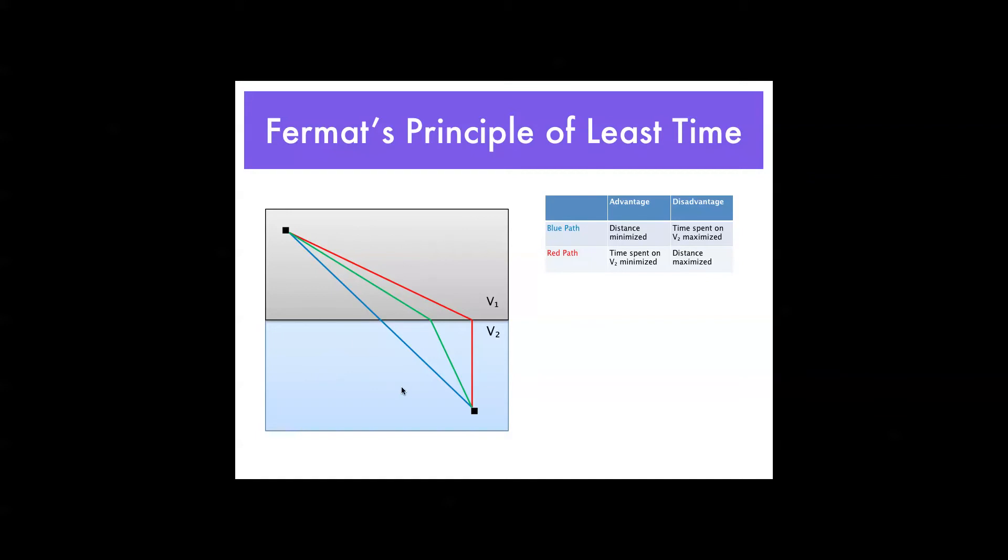Pavement, snow. Obviously, V2 is less than V1, these being velocities, because you travel slower on the snow. That is why many claim that the red path is the optimal path of least time, being that time spent on the slower part is minimized.